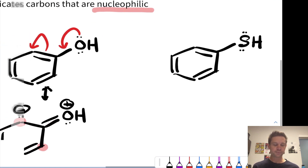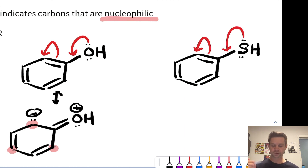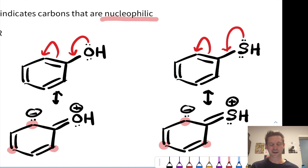The SH group is pretty much isoelectronic with the OH group, and it again fits the pattern — single bonds only at the sulfur atom. It's got a lone pair that can be donated, and we can push electrons just like in the other two examples to generate an alternative resonance form that puts negative charge on this carbon. Once again, there are two other resonance forms with negative charge at two other positions — take some time to draw those out as well.